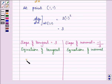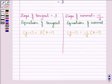This is y minus y1 equals slope into x minus x1. Here also, y minus y1 equals slope of the normal, that is minus 1 upon 3, times x minus x1.